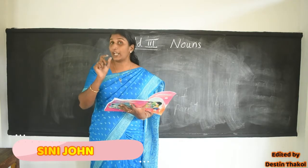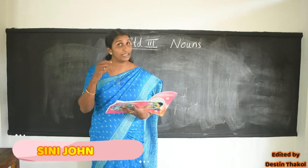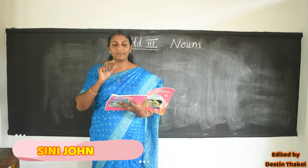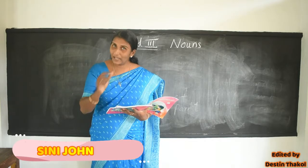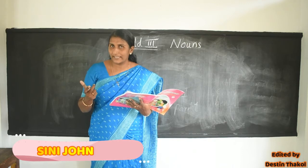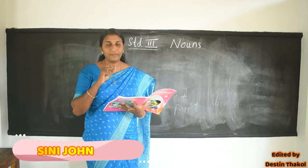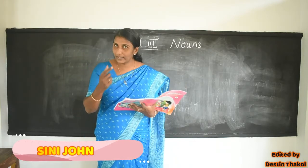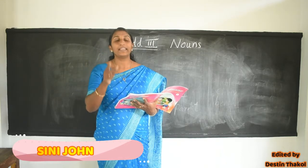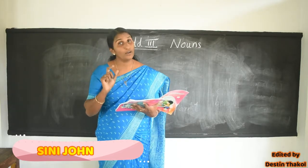In our textbook, unit number 4, noun is the name of the person. Let me repeat once again the definition for noun. A noun is the name of a person, place, animal or thing. Let's memorize this. A noun is the name of person, place, animal or thing. You can see this in your textbook.